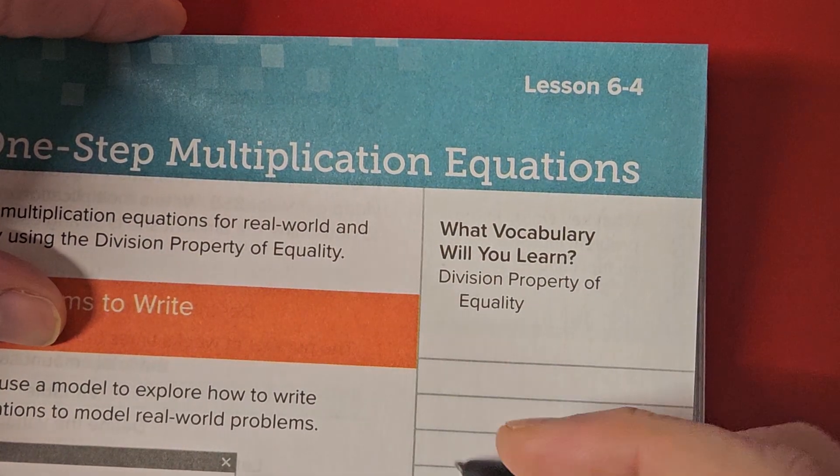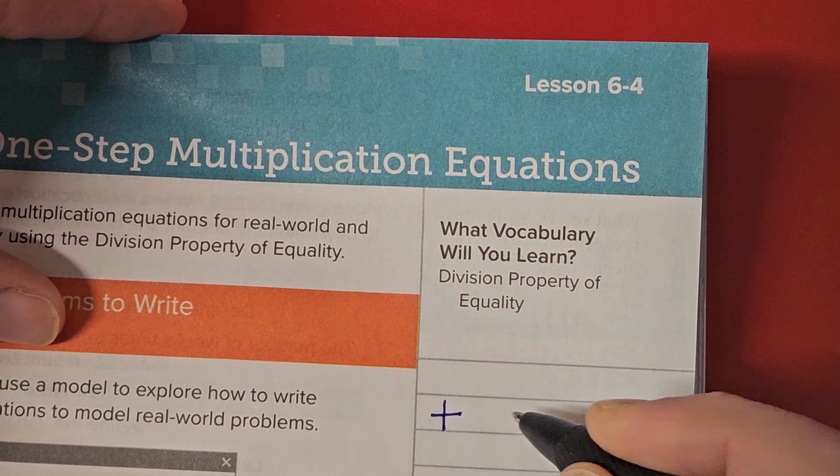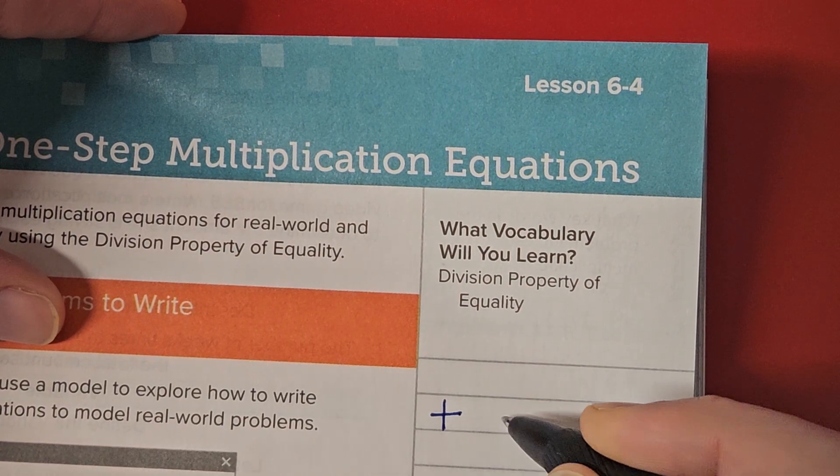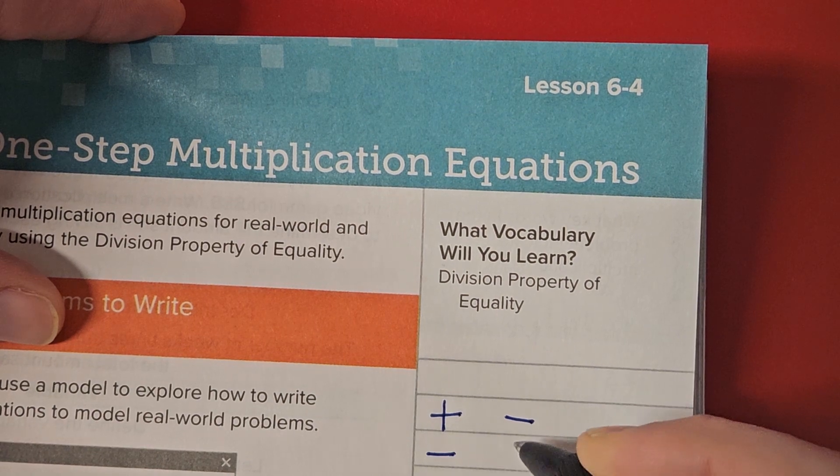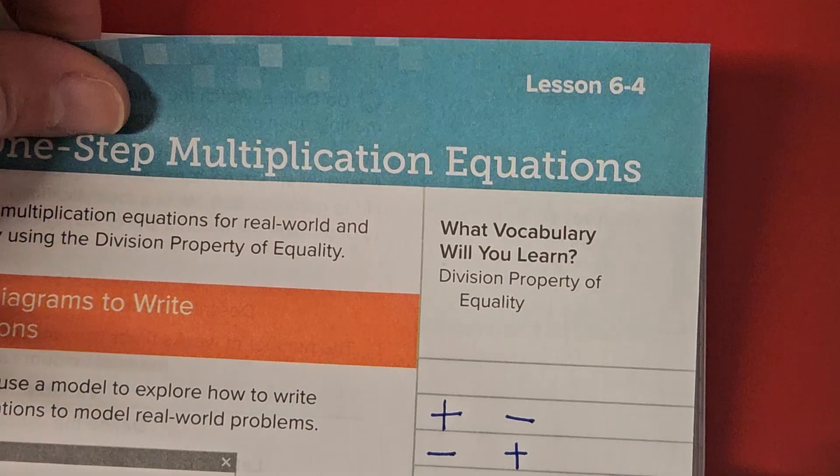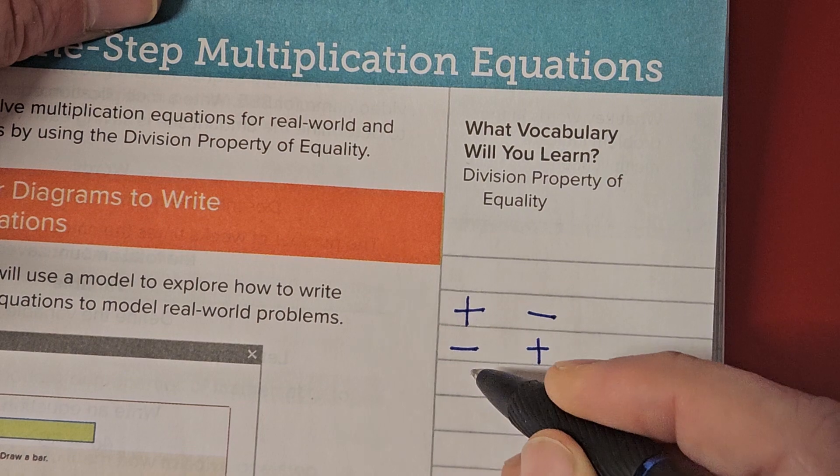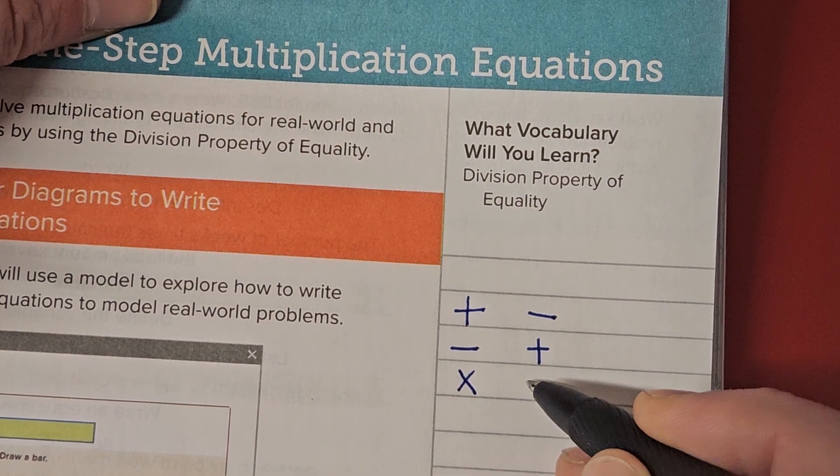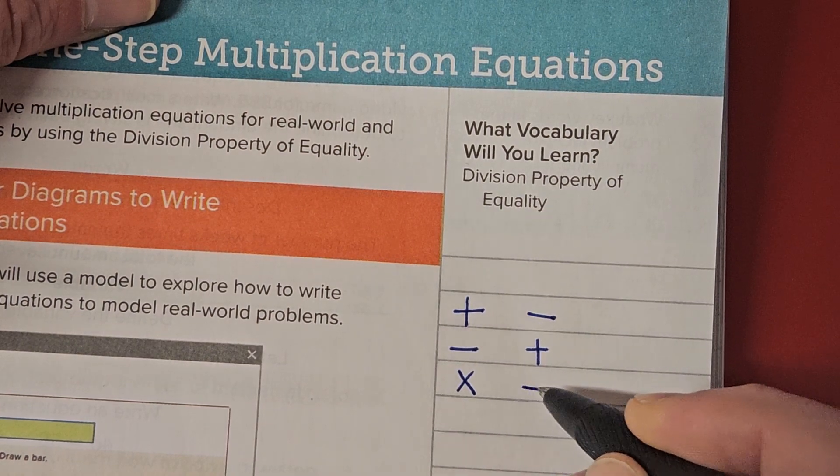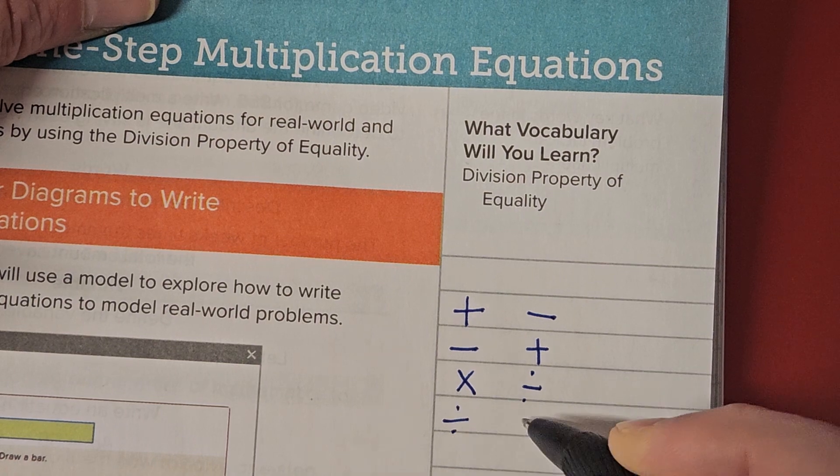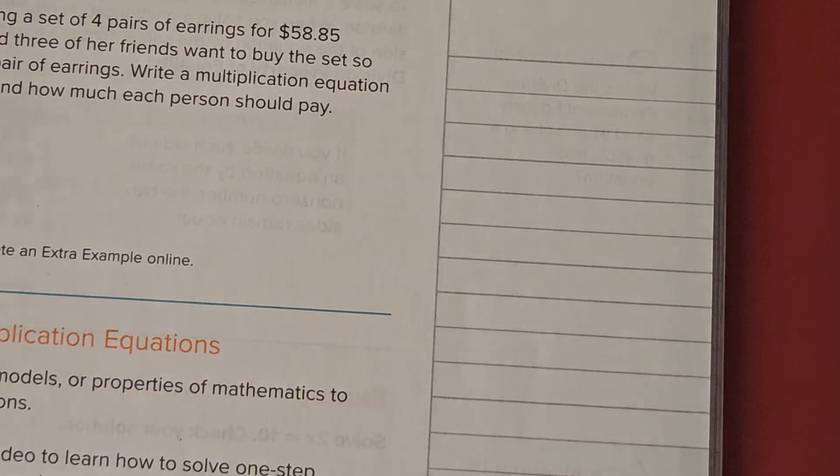So yesterday we said that addition is the opposite of subtraction, or that subtraction is the opposite of addition. But now we're talking about multiplication. What's the opposite of multiplication? Yeah, division. And it turns out division is the opposite of multiplication.